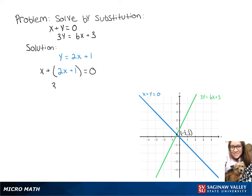Combining our x's and subtracting 1 over gives 3x equals negative 1, and dividing both sides by 3 gives our x value of negative 1 third.